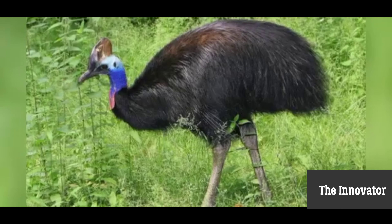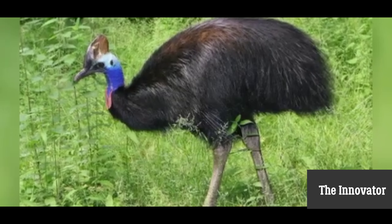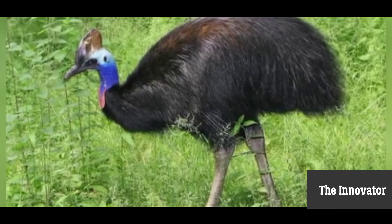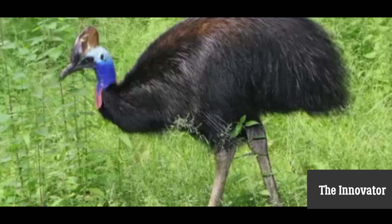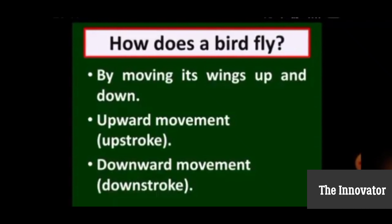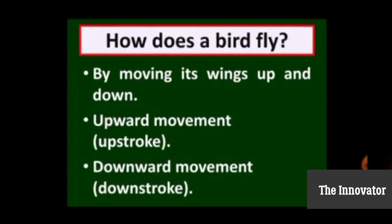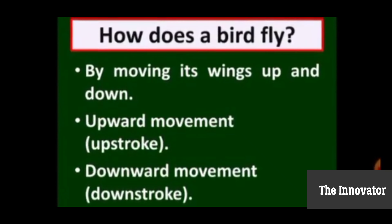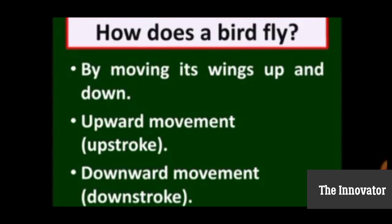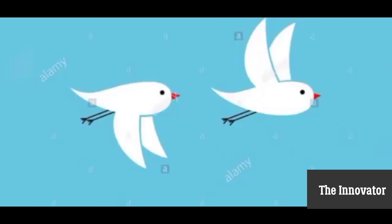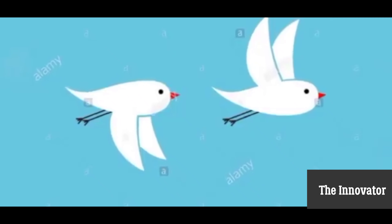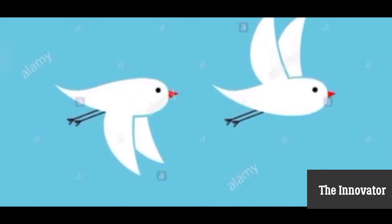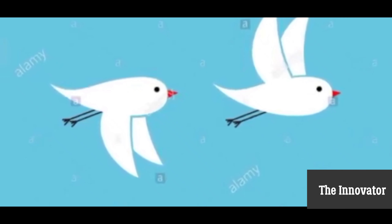Yeh aise birds hai joh ura nahi sakte hai. Aur yeh ostrich hai. This is an ostrich — this is also a flightless bird. Now, how does a bird fly? A bird flies by moving its wings up and down. As we mentioned earlier, the wings of the birds are attached with strong muscles of the body. A bird usually uses two types of movements: upward and downward movements.